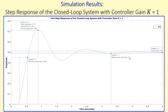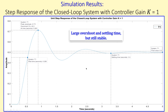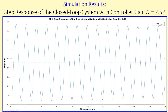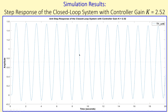The settling time is 3.3 seconds. So while the system is stable, it has a large overshoot and a large settling time. For the closed-loop system with K = 2.52 — our calculated maximum — the system is at the edge of stability, going almost unstable, confirming that 2.52 is really the maximum.